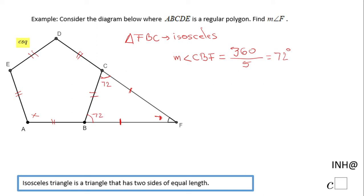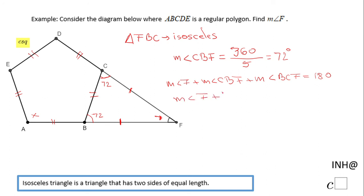This angle is 72° and this angle is also 72°, because both are exterior angles of polygon ABCDE. Then we can say: the measure of angle F plus the measure of angle CBF plus the measure of angle BCF equals 180°. So we have angle F plus 72 plus 72 — the two base angles of the isosceles triangle — equals 180°. Combining the two 72s gives us 144°.